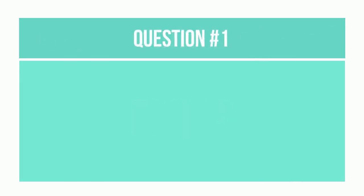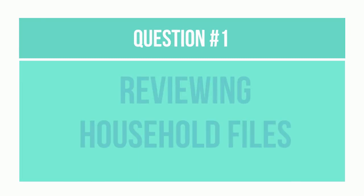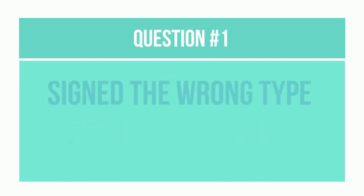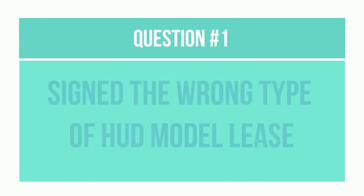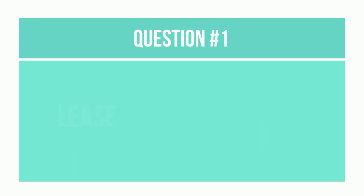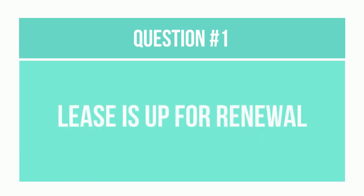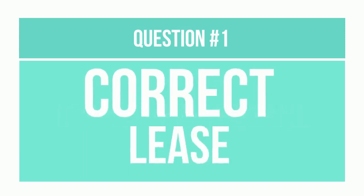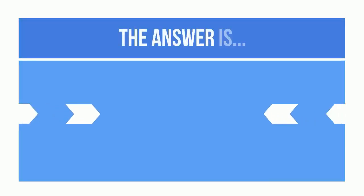Question 1. Yes or No: When reviewing household files, you discovered that a resident signed the wrong type of HUD model lease for your site's program. Can you wait until the lease is up for renewal to give the tenant the correct lease? The answer is no.